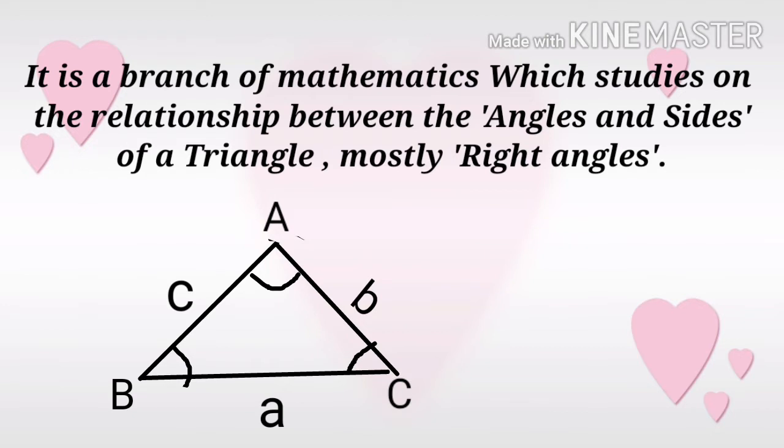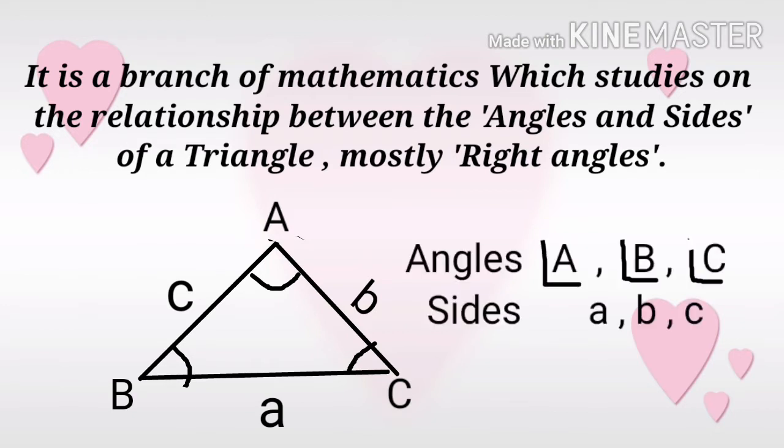So in a triangle, there are six measures: three angles (Angle A, Angle B, Angle C) and three sides (small a, small b, small c).